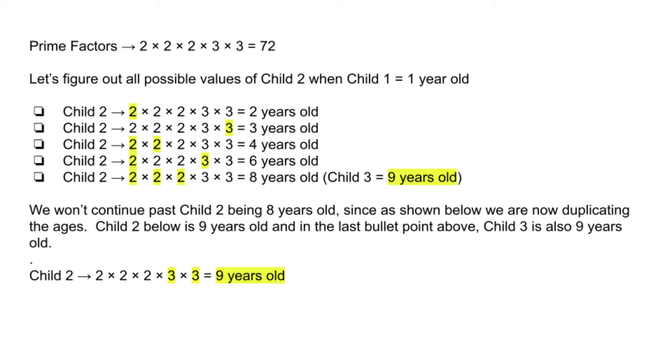We won't continue past child 2 being 8 years old, since as shown below, we are now duplicating the ages. Child 2 below is 9 years old, and in the last bullet point above, child 3 is also 9 years old.